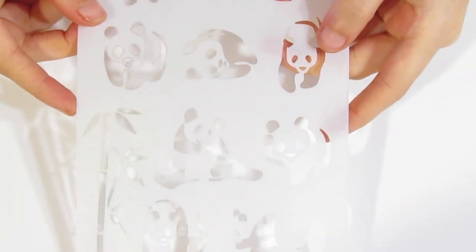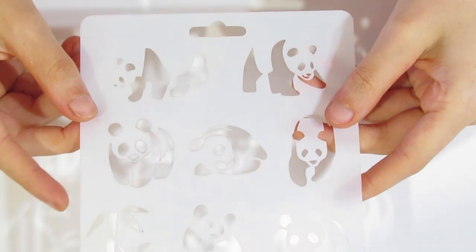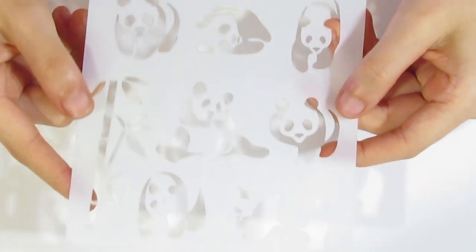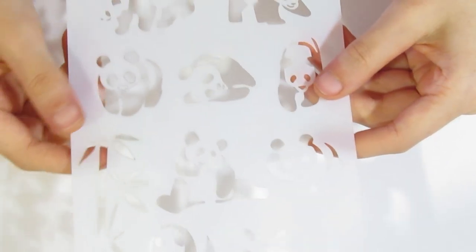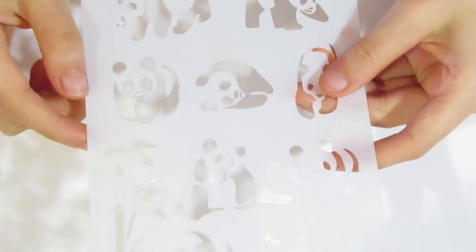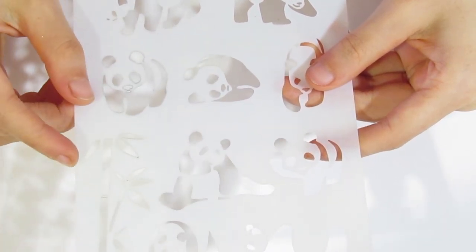What you're going to need, and this is a must tool for this project, is a panda stencil. I sell one of these on my Etsy shop and you can see that there are multiple panda designs on this along with a little bit of bamboo down this side. The one that we're going to be using is this one over here because it fits my round circle quite well, and we're going to be using just a little bit of our bamboo as well. That's just a must-have for this project.